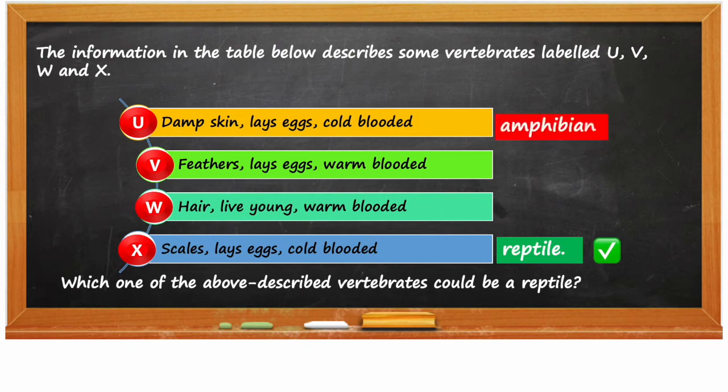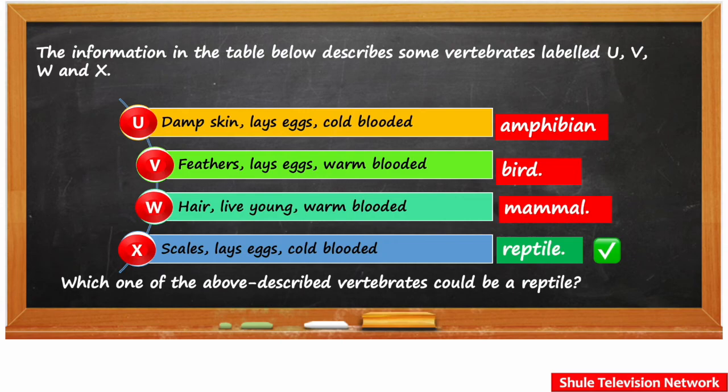U describes the characteristics of an amphibian. V describes the characteristics of a bird. And W describes the characteristics of a mammal.